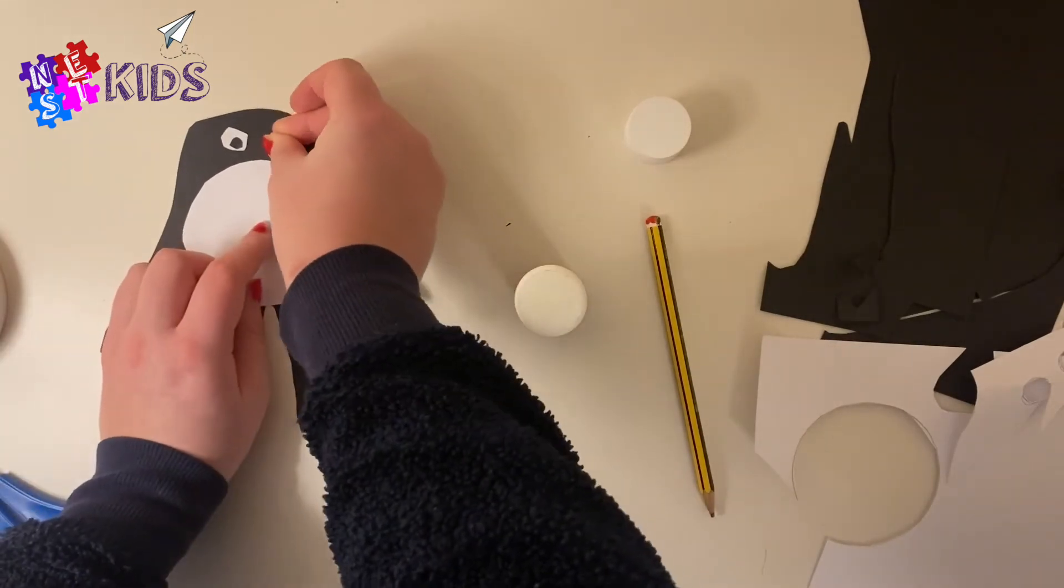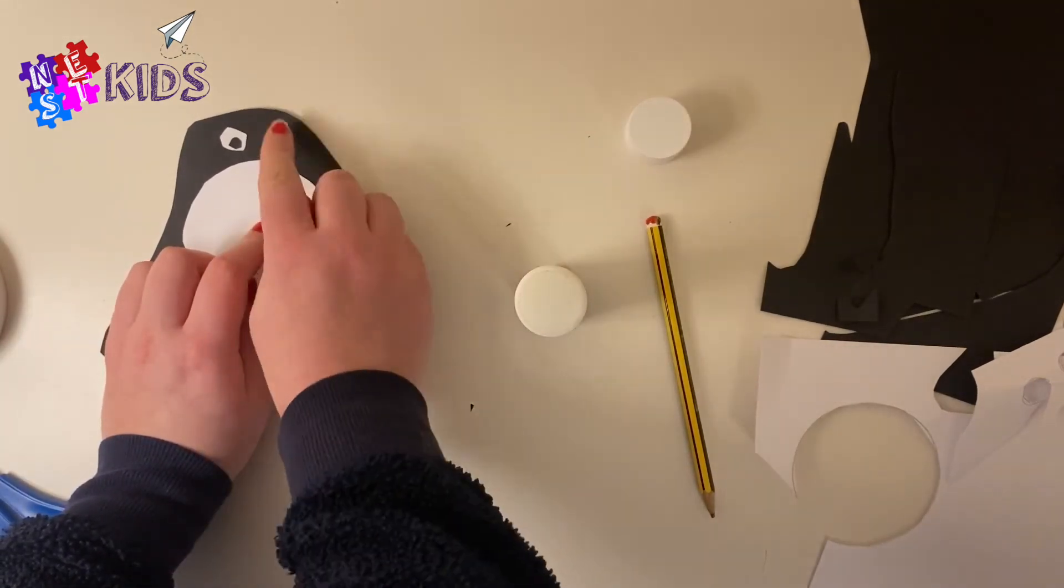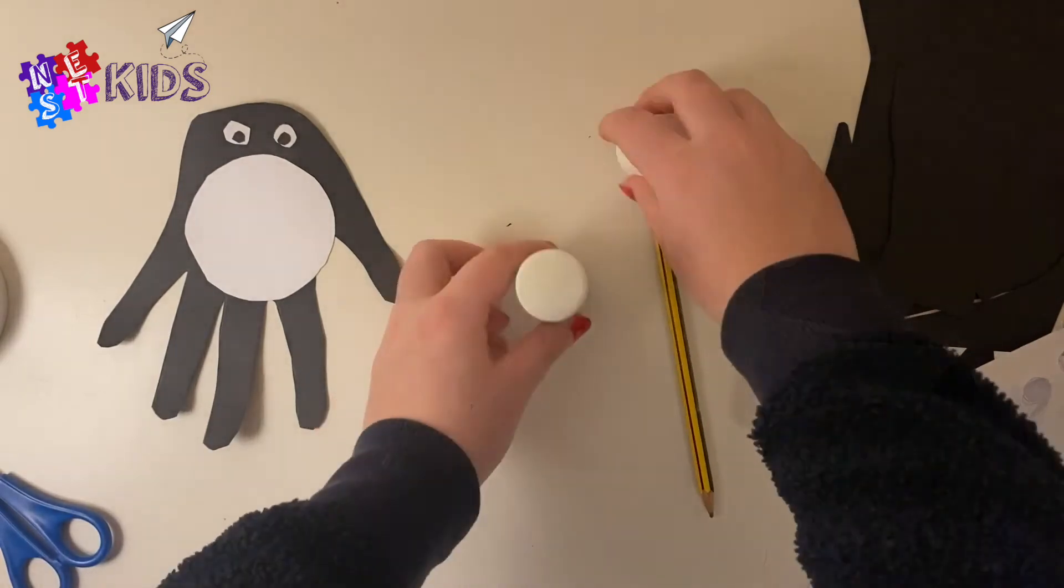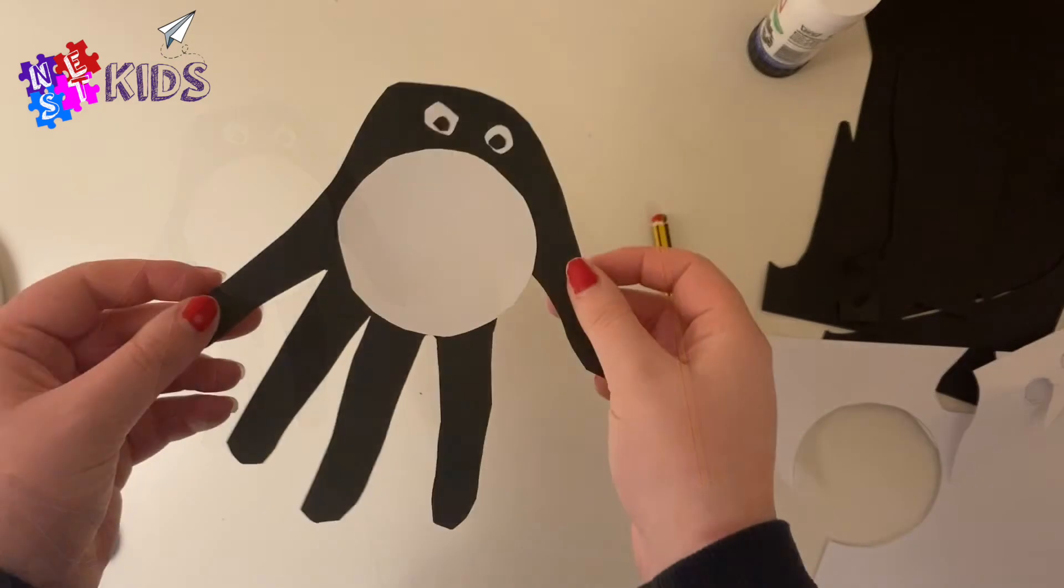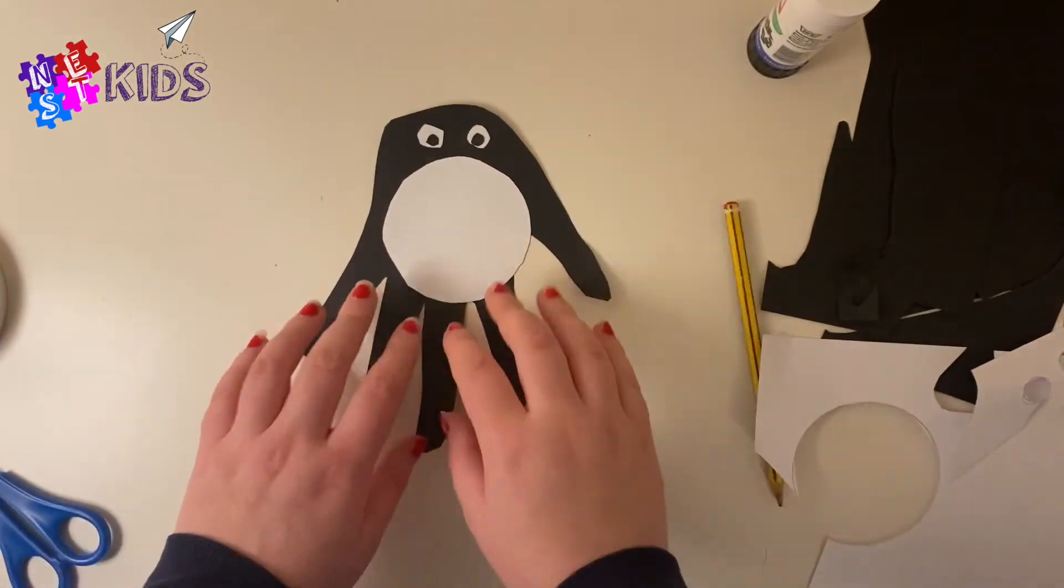There's one eye and there's another eye stuck on. Be careful with the glue you don't get it stuck to your fingers. There you go, two eyes, and remember to put the lid back on your glue so it doesn't dry out.